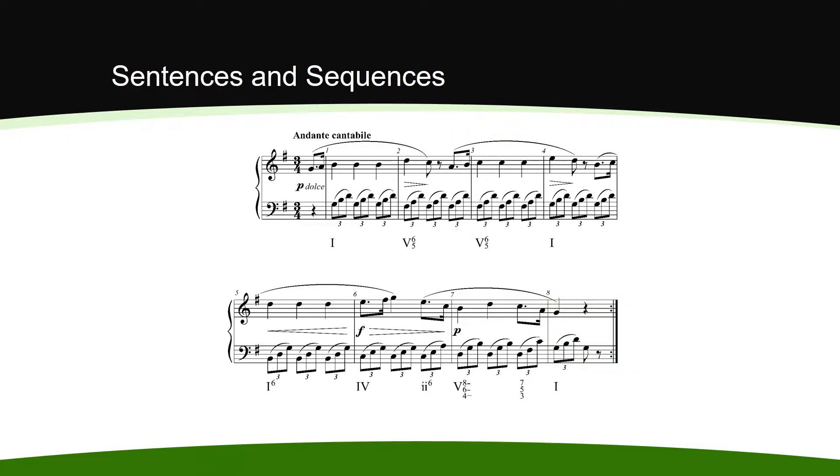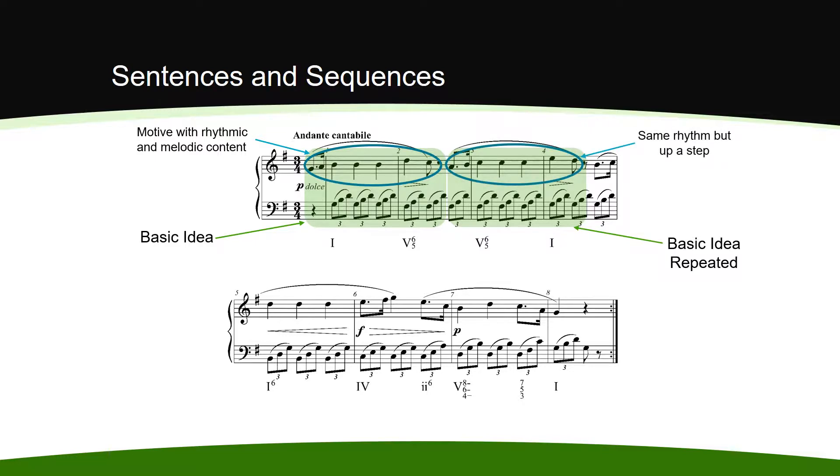A sentence is generally eight measures long. The basic idea is generally two measures long and frequently contains one or several distinct motives. The basic idea is then repeated, although normally at a different pitch level. The initial statement and repetition of the basic idea is known as the presentation.